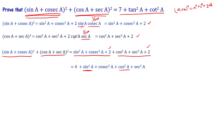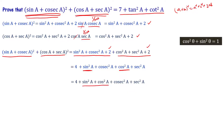Rearranging the expression to bring sin²a and cos²a closer together: 4 + (sin²a + cos²a) + cosec²a + sec²a. Applying the identity sin²a + cos²a = 1 gives 4 + 1 + cosec²a + sec²a, which equals 5 + cosec²a + sec²a.